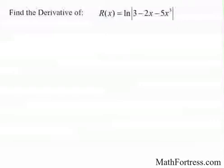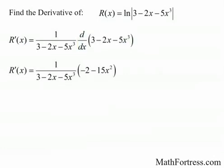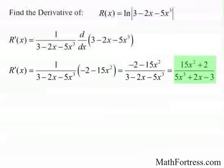For the final example, find the derivative of r of x equals the natural log of the absolute value of 3 minus 2x minus 5x cubed. Since the derivative of ln|x| is 1 over x, we apply the chain rule with the inner function 3 minus 2x minus 5x cubed. This gives the expression 1 over (3 minus 2x minus 5x cubed) times the derivative of the inner function, resulting in (negative 2 minus 15x squared) over (3 minus 2x minus 5x cubed), or equivalently (15x squared plus 2) over (5x cubed plus 2x minus 3). In the next video, we will exploit algebraic properties of logarithms to rewrite complicated functions into a more manageable form.